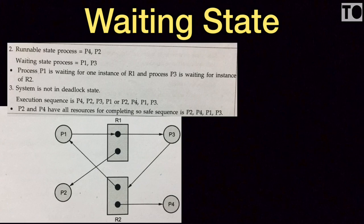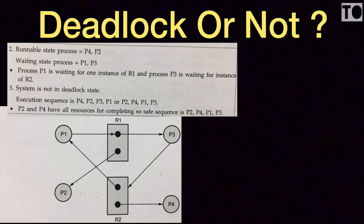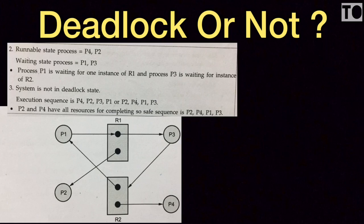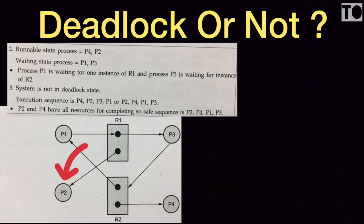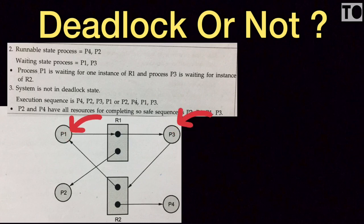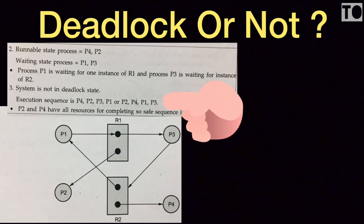P3 is waiting for an instance of R2. Now the third question: is there a deadlock? The safe sequence is P4, P2, P1, P3 — or equivalently P2, P4, P3, P1. P4 is checked first, then P2, then P1 and P3. P2 and P4 have all resources needed for completion, so the order of P4 and P2 first, followed by P3 and P1, is established.